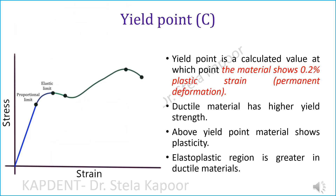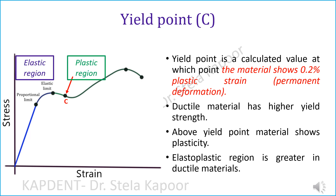The yield point is the same as the elastic limit, except that this point is a precise, calculated value where the material shows 0.2% of plastic strain or permanent deformation — the material yields or gives into the pressure. The elastic band no longer snaps back to its original shape; rather, distortion occurs. So below the elastic limit, the material shows elastic behaviour, while above the yield point, it shows plastic behaviour. The area in between these two points is called the elasto-plastic region.